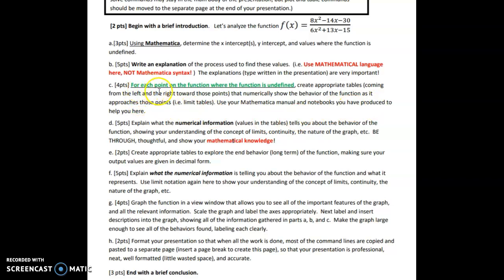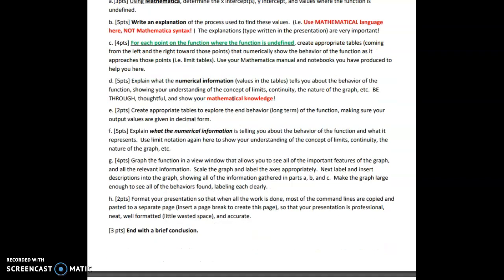So for part c, it says for each point on the function where the function was undefined, create appropriate tables coming from the left and right. Again, use your past Mathematica notebooks that you've already produced to help you here. But just change the function to this function, so we're looking at this function. Then explain what those tables tell us about the function coming to those points. Be thorough and thoughtful and show me your mathematical language here. Your mathematical language and knowledge. How do you know this from what we've learned in Unit 1 and 2?